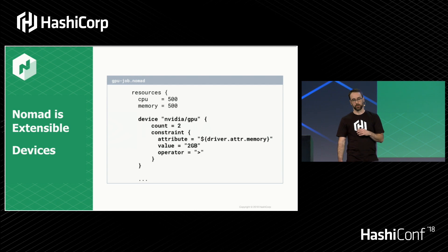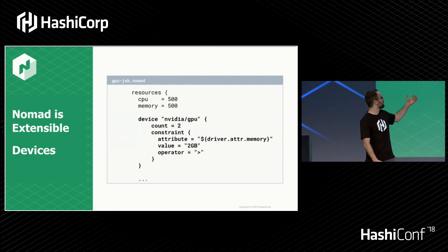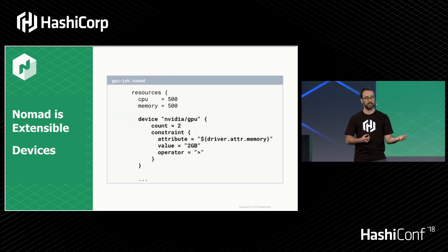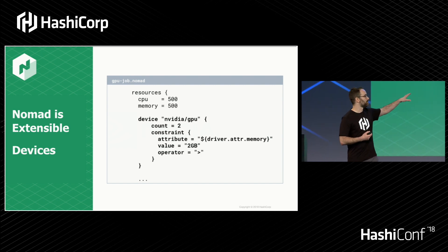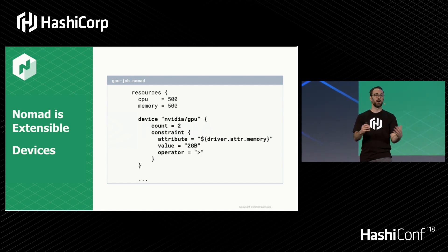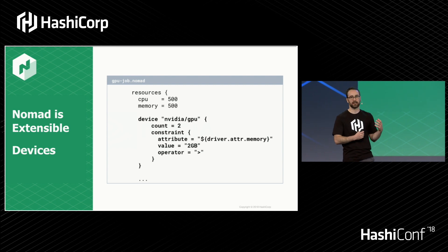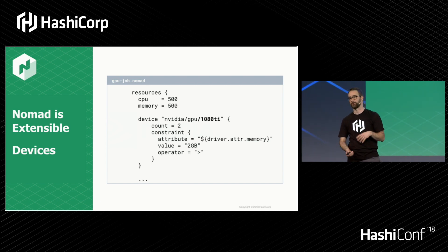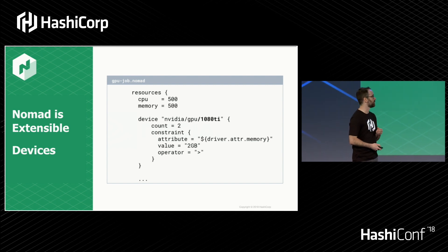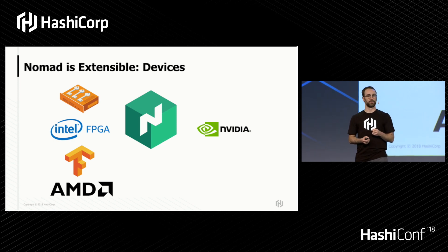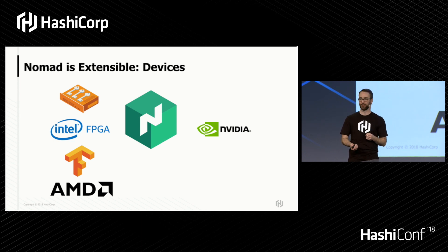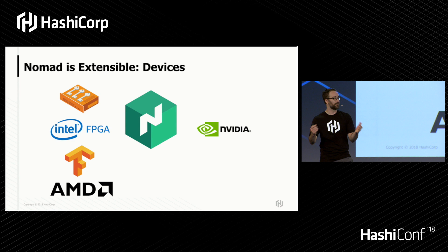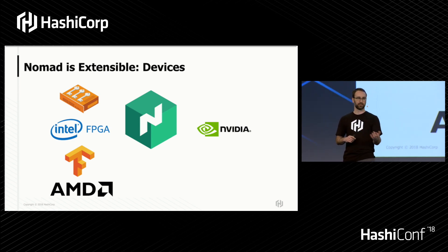You'll use GPU resources just like any other resource in a job file definition. In this example, you can see it's requesting an NVIDIA GPU — it wants a node with two GPUs, each with at least two gigabytes of memory. These attributes are definable by the device plug-in and support a number of units and scheduling dimensions, including power consumption and bandwidth for network devices. You can even specify the model name of the specific device you want. While we're shipping NVIDIA today, we're hoping to see community support for other devices — FPGAs, HSMs, TPUs — as they become more common in the cloud.